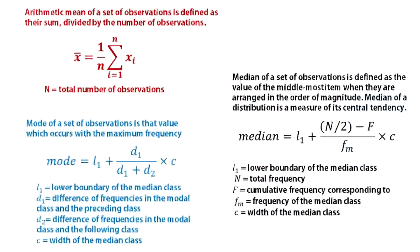Arithmetic mean of a set of observations is defined as their sum divided by the number of observations. Median of a set of observations is defined as the value of the middlemost item when they are arranged in the order of magnitude.